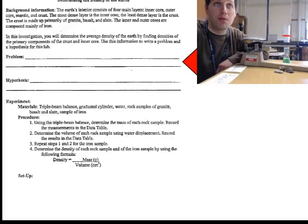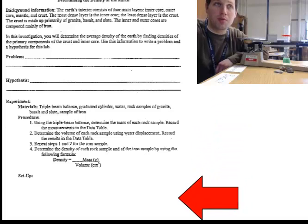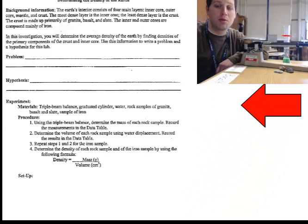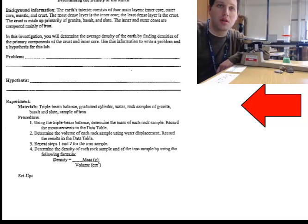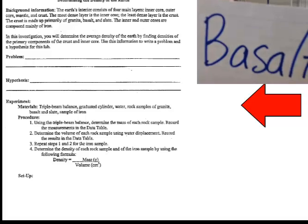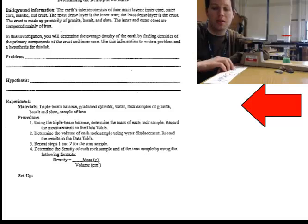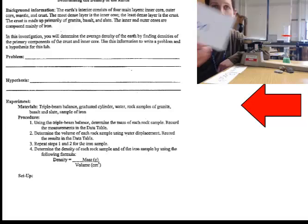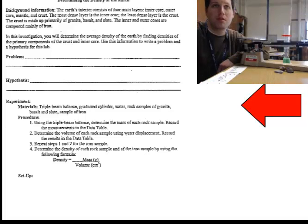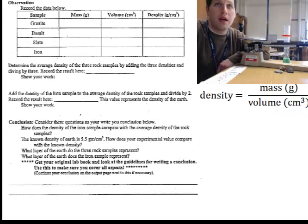There will be four lab stations. Four stations represent rocks from the earth's crust. One of the stations is slate, another rock layer in the crust is often basalt, and another rock found commonly in the crust is granite. There's one other lab station which represents earth's inner core, which is iron.